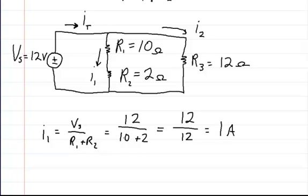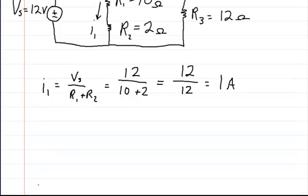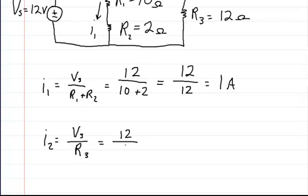We do the same thing for the second branch. For the current in branch 2, you're going to get the total voltage in that branch, which is equal to Vs, divided by the total resistance, which is just R3. That's going to be equal to 12 volts divided by 12 ohms, for a total of 1 amp.